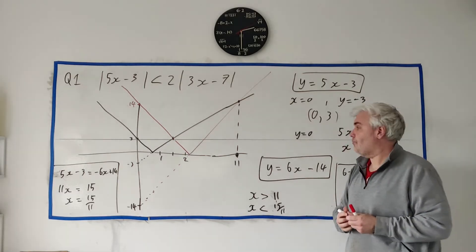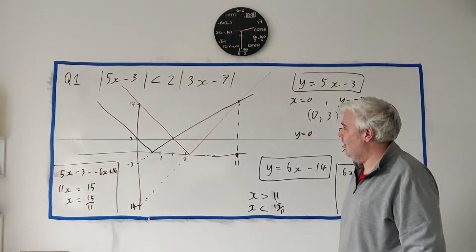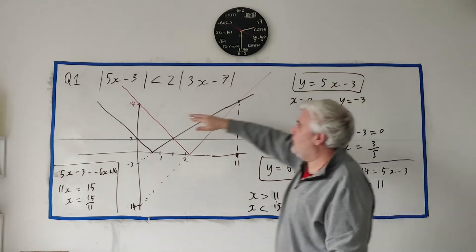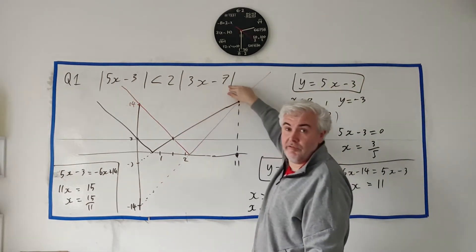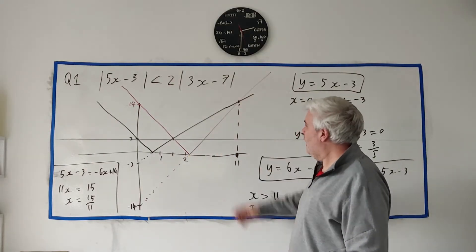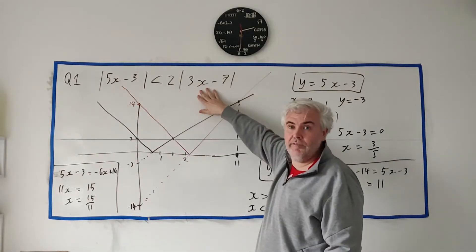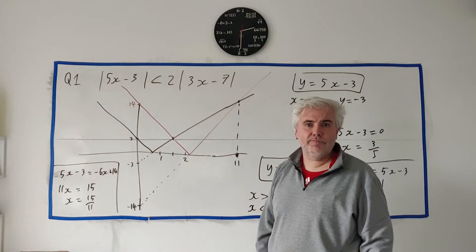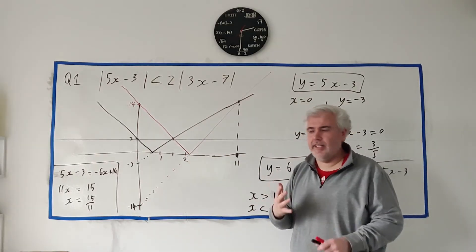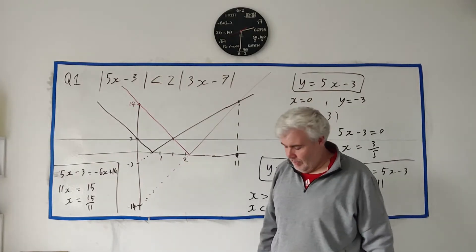So x equals 15 over 11 is the other answer. That's the question done graphically. You sketch it roughly — you don't have to be exact. It gives you the idea of which lines to equate: use the positive version of each line to get x equals 11, and the positive one with the negative one to get x equals 15 over 11. This approach gives you a better understanding of inequalities.